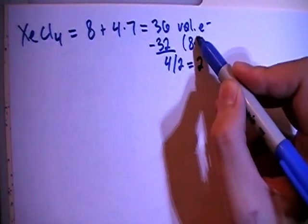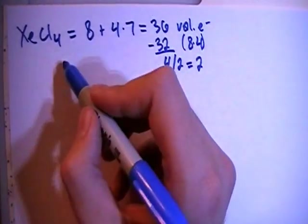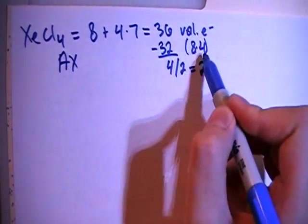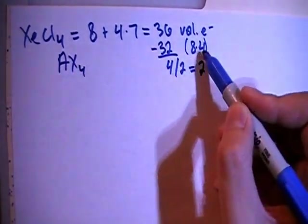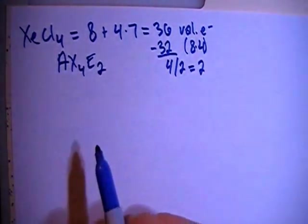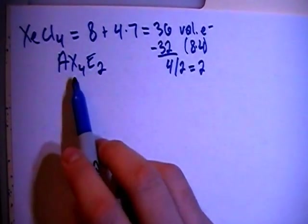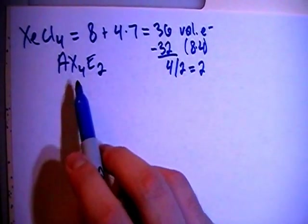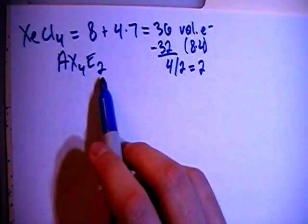And 8 times 4 is 32, which means that this is going to be an AX4 E2 type of structure. Meaning, central atom surrounded by 4 peripheral atoms, and the central atom also has 2 non-bonding pair of electrons.